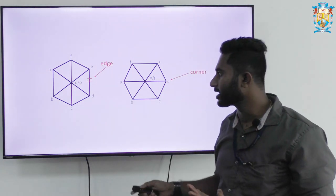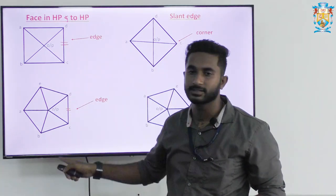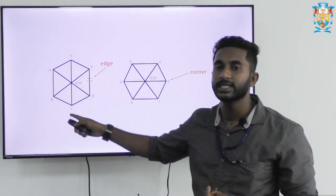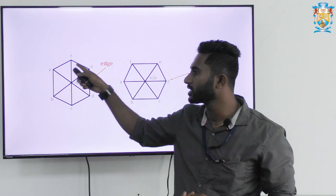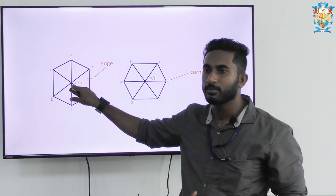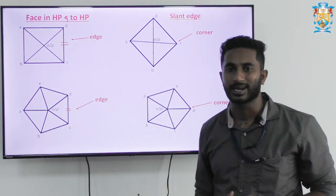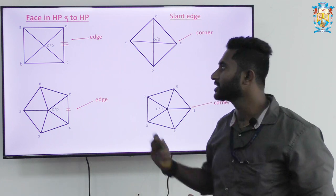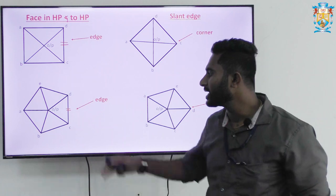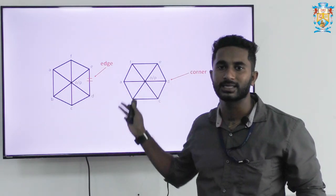If you look at all three diagrams — the square pyramid, the pentagonal pyramid, and the hexagonal pyramid — in all three, the edge of base is kept on the right side. All points in the hexagonal pyramid, A B C D E F, have been joined to a single point O and P. So if the edge of base is in HP or VP, the edge is to be kept at the right side — always remember that.